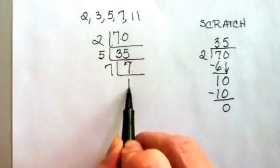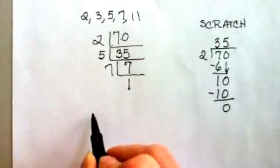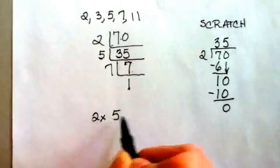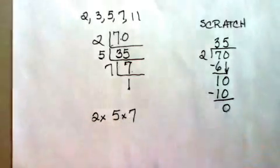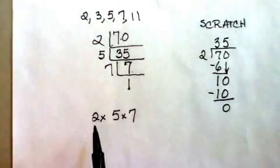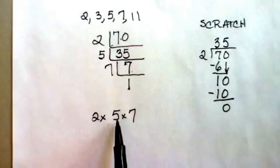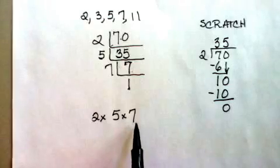And I've reached 1 on the bottom. So my final answer is 2 times 5 times 7. And if I want to check that, 2 times 5 is 10. 10 times 7 is 70.